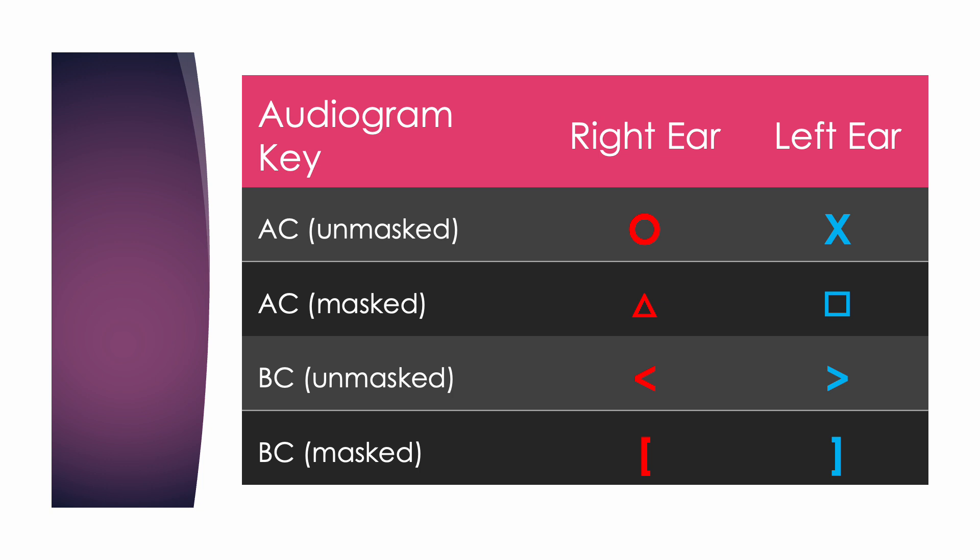These two types of testing — air conduction and bone conduction — help audiologists determine the type of hearing loss taking place. Sensorineural hearing loss takes place at the level of the inner ear or the nerve. Conductive hearing loss takes place when sound cannot get through the outer and middle ear. Mixed hearing loss is a combination of the two.